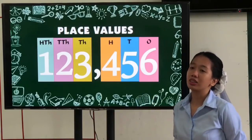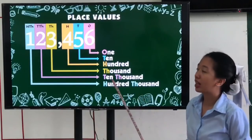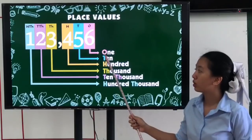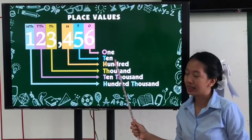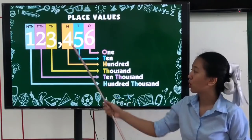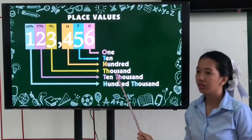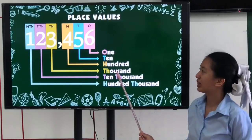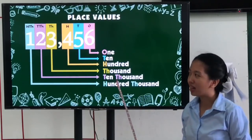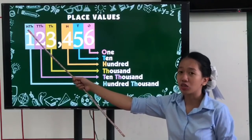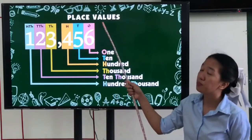So what do these letters mean? O stands for 1 (ones). T stands for 10 (tens). H stands for 100 (hundreds). TH stands for 1,000 (thousands). TTH stands for 10,000 (ten thousands). And HTH stands for 100,000 (hundred thousands). Those are our place values.